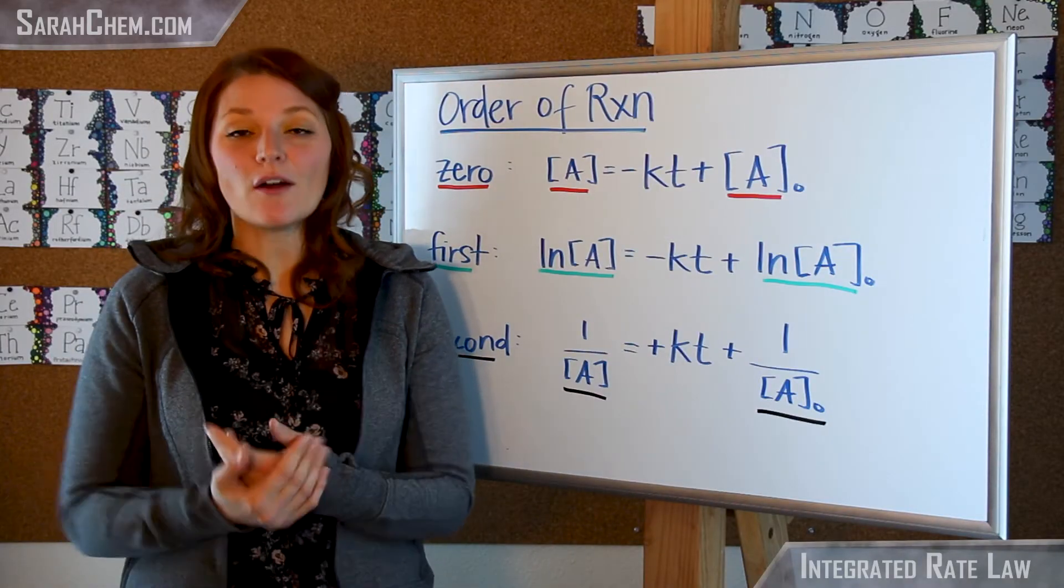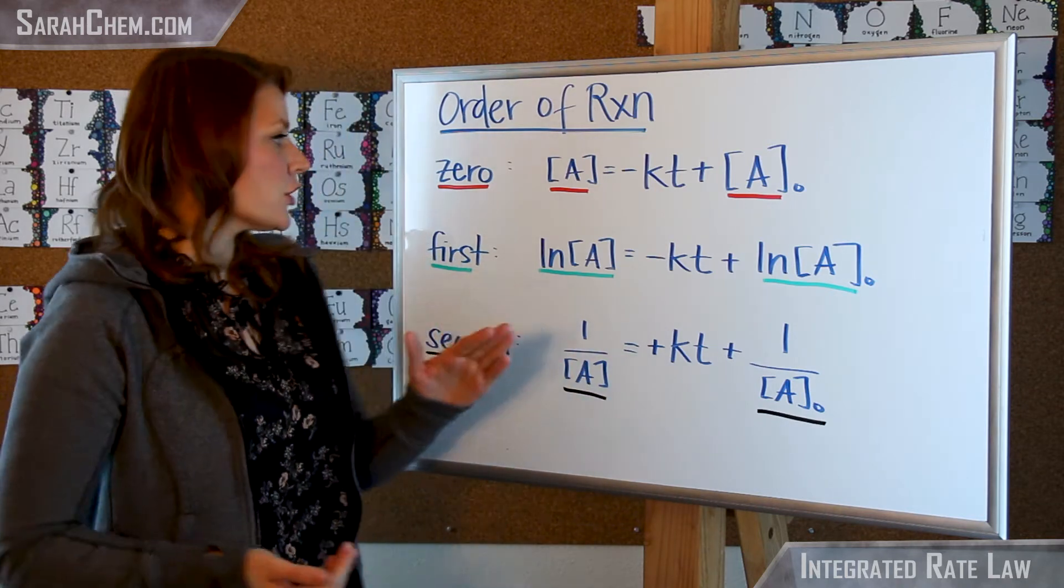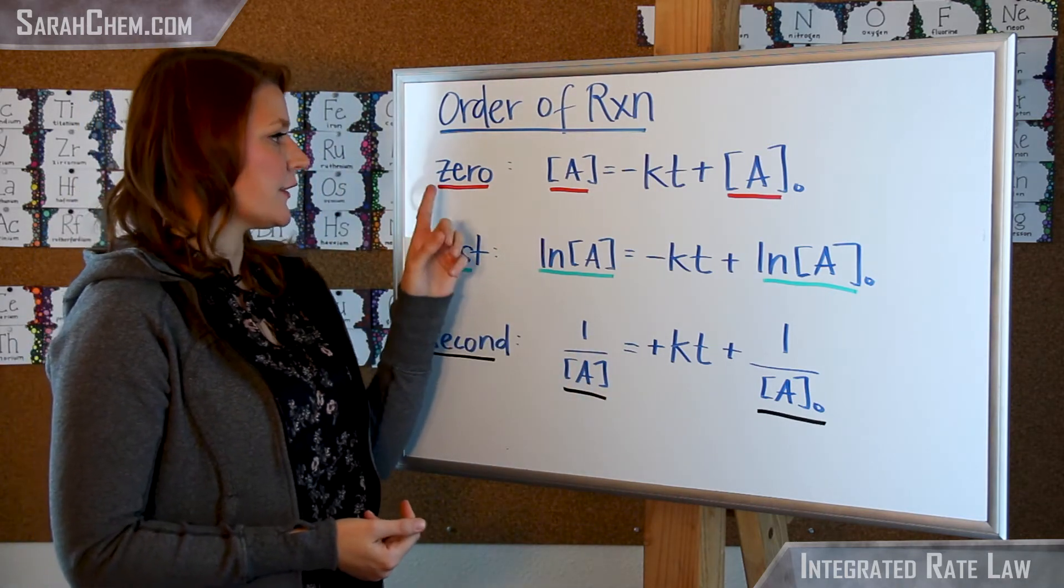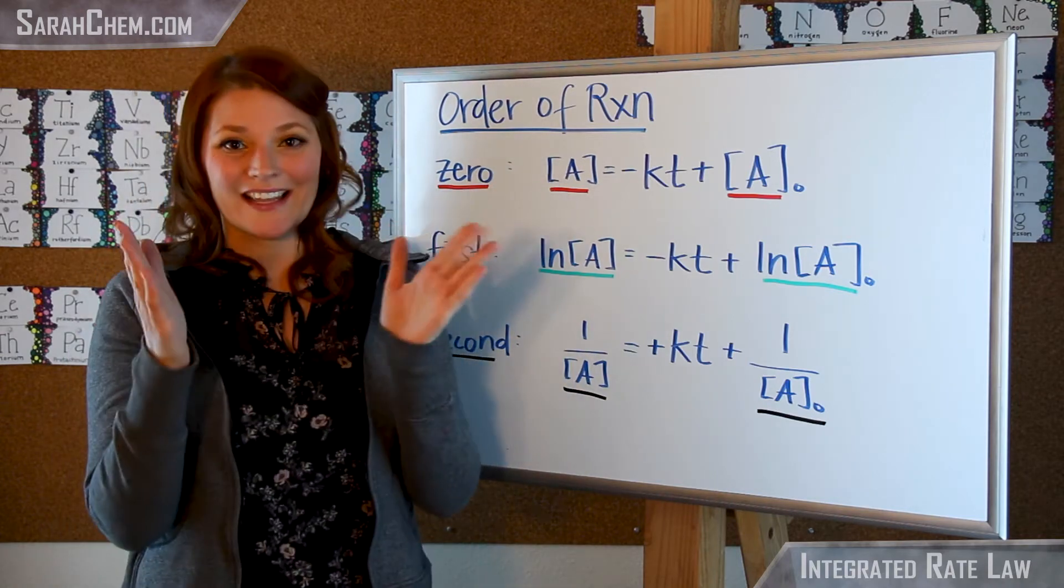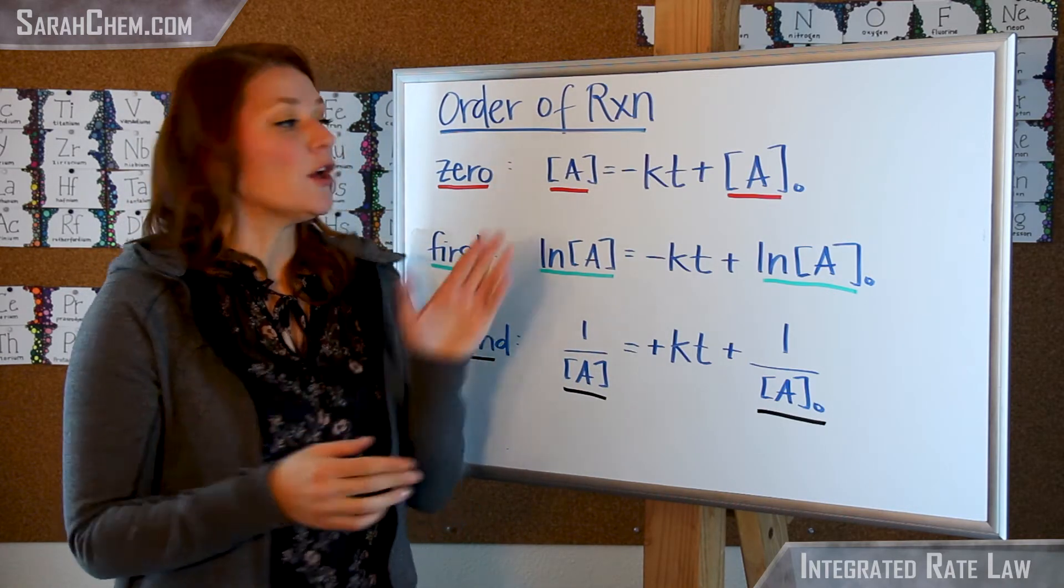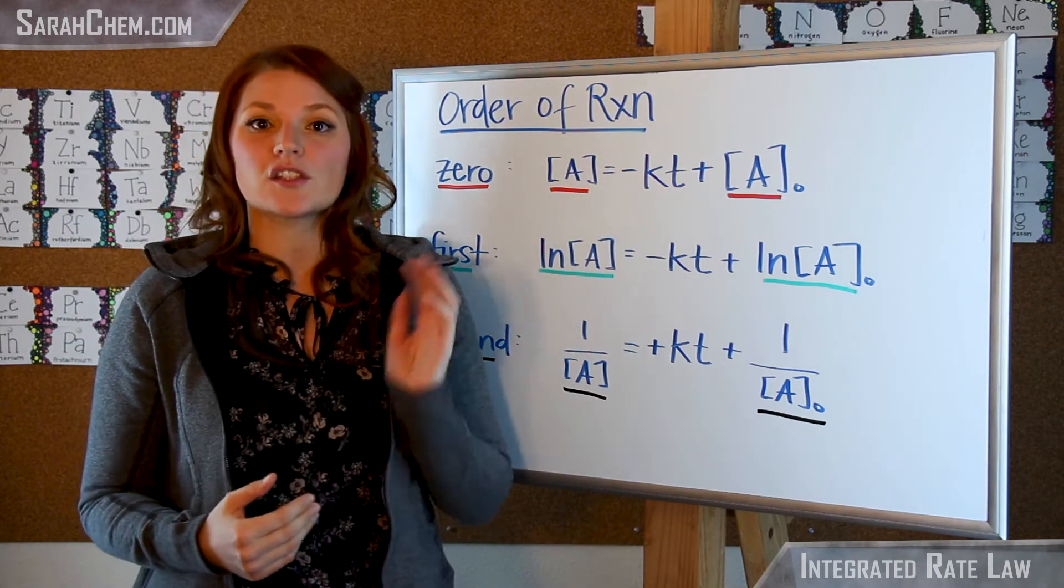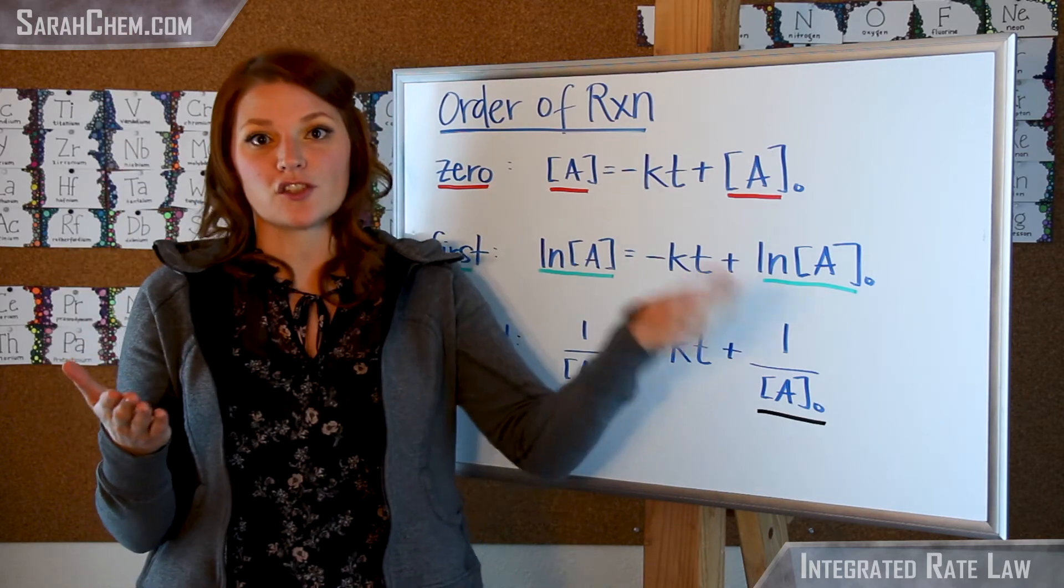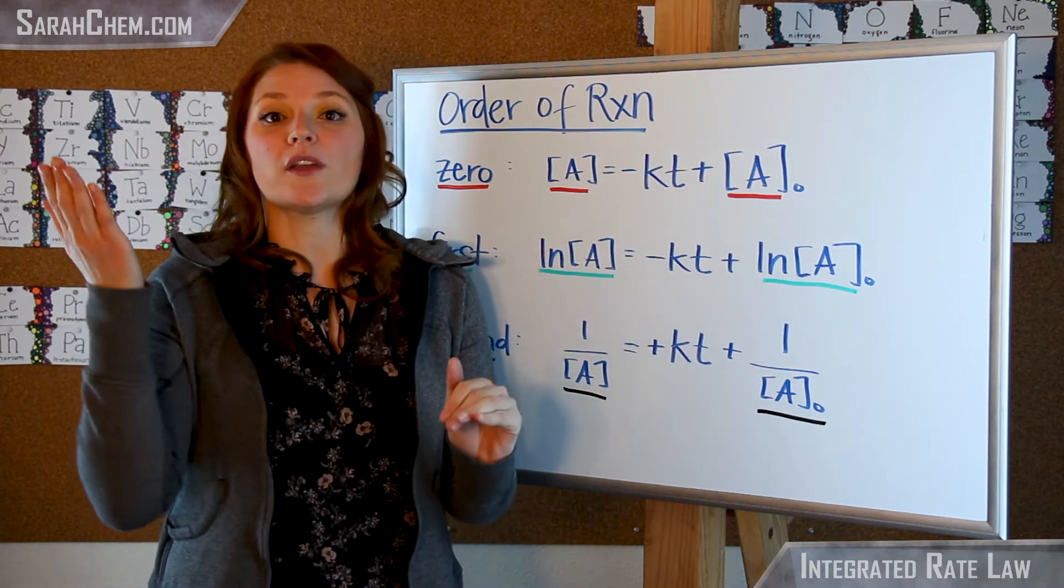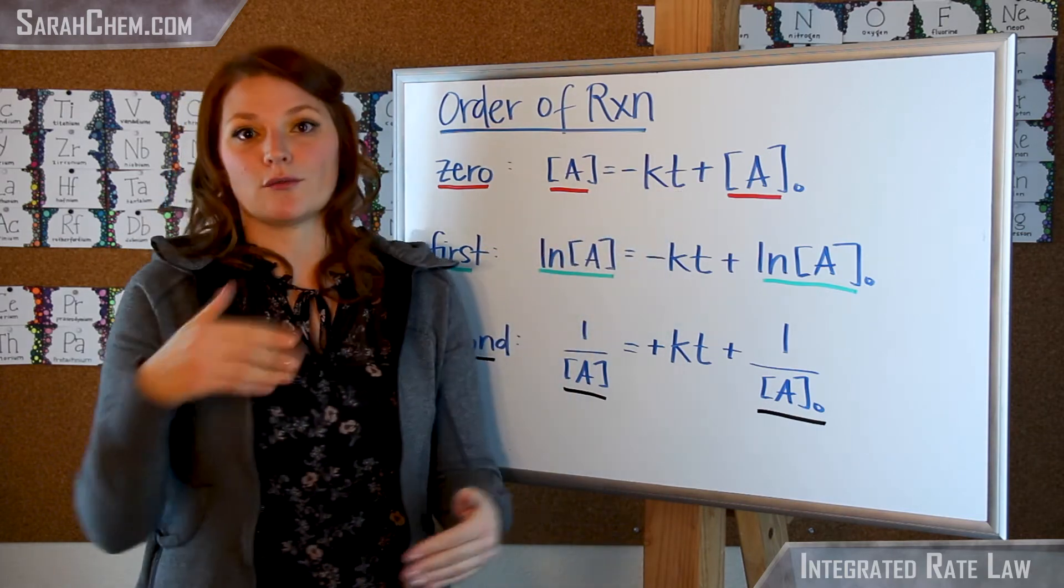Okay, so let's go ahead and see how the order of a reaction can affect the format of the integrated rate law. If we take a look over here, we know we have a zero order integrated rate law if we're plotting the concentration as it is, not manipulating it in any way, relative to time, and you'll notice that here we have a negative slope. So in this case, if you were to take the concentration of your reactant as it changes over time and plot it, you'd get a straight line if it was zero order.